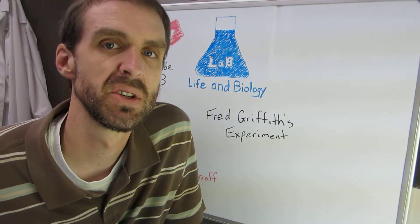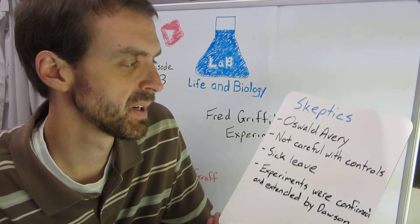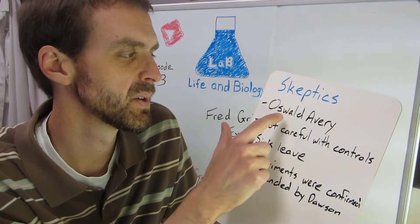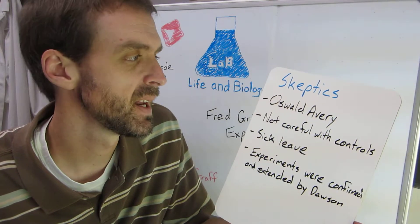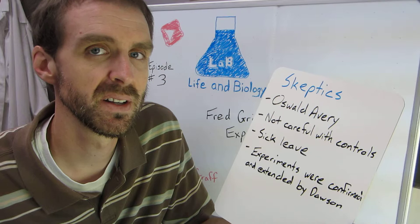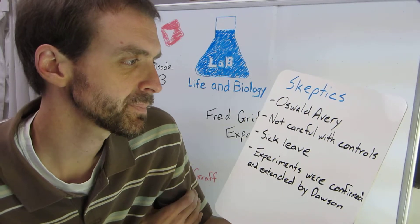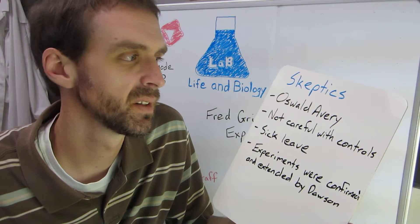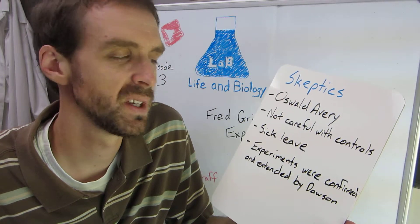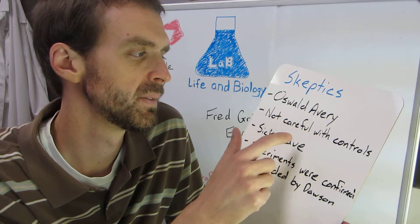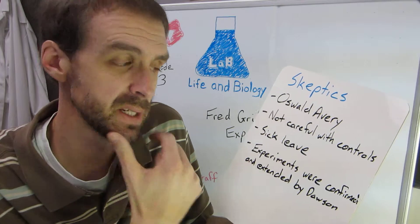With any paradigm shift you're going to have skeptics, and one of them was Oswald Avery, who we'll talk about soon. Oswald didn't think the experiments could be true. He assumed that maybe Fred Griffith wasn't careful with his controls.